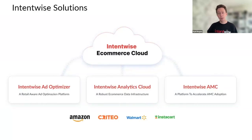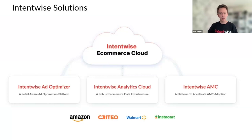If you're not familiar with IntentWise, we have what is called our IntentWise E-Commerce Cloud Solutions. There are three products we offer to brands and agencies that sell on Amazon, Criteo, Walmart, and Instacart. The first application is the IntentWise Ad Optimizer, which uses rules and AI to help you optimize your Amazon and Walmart advertising.